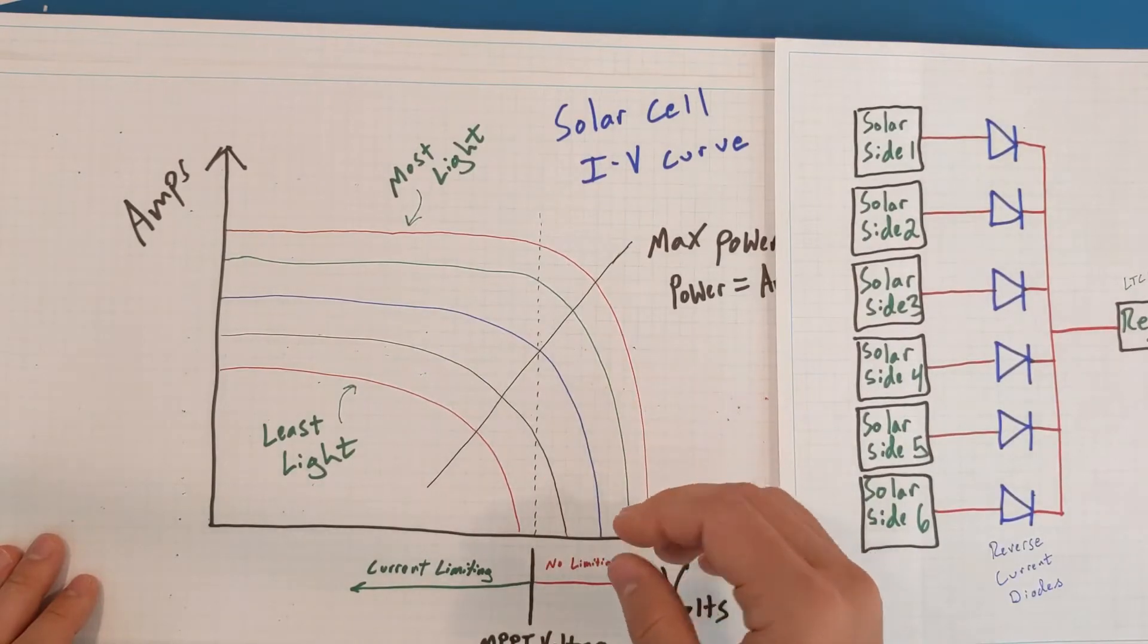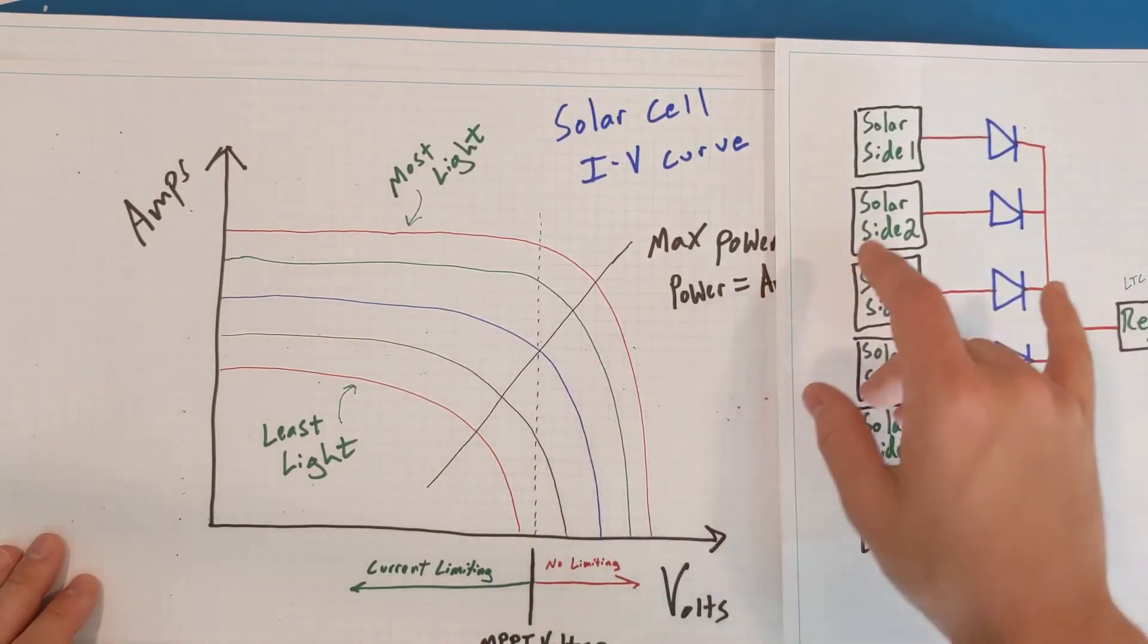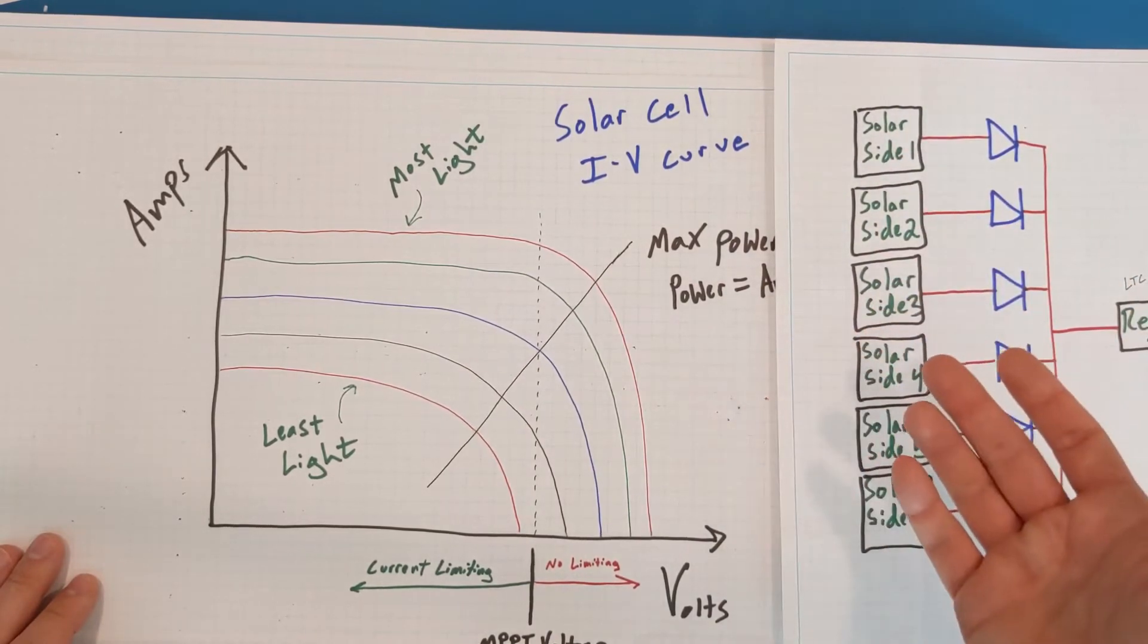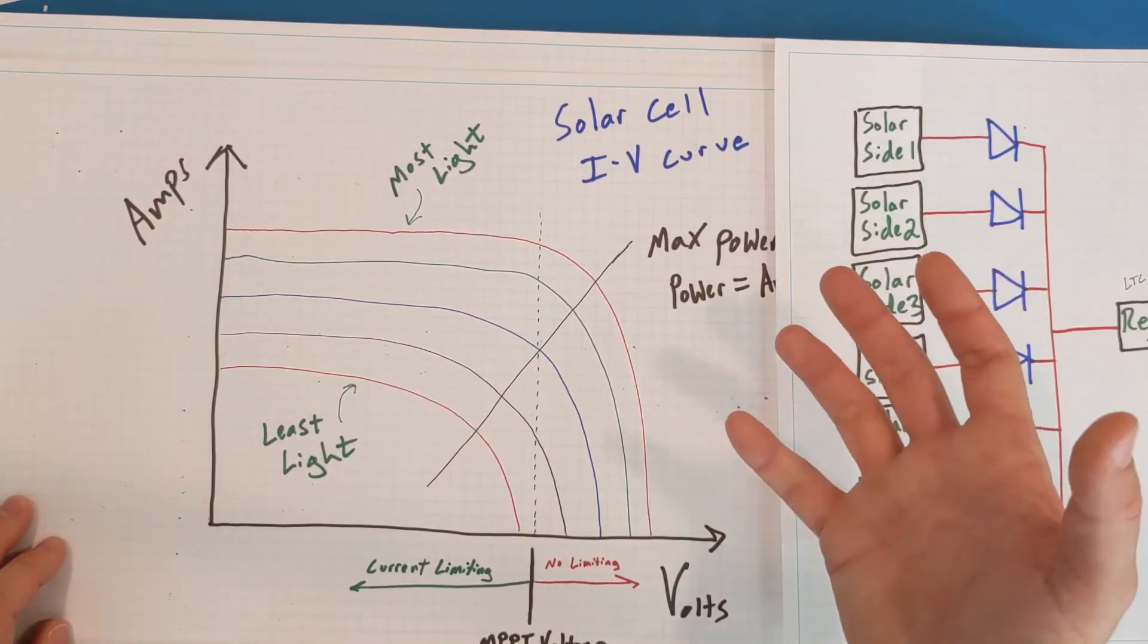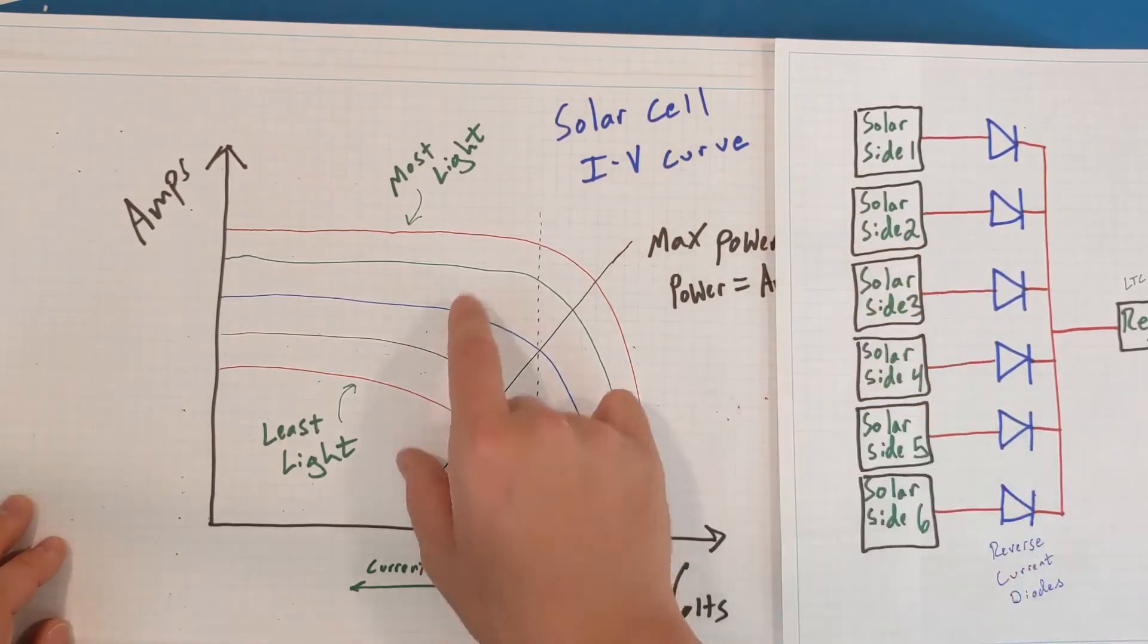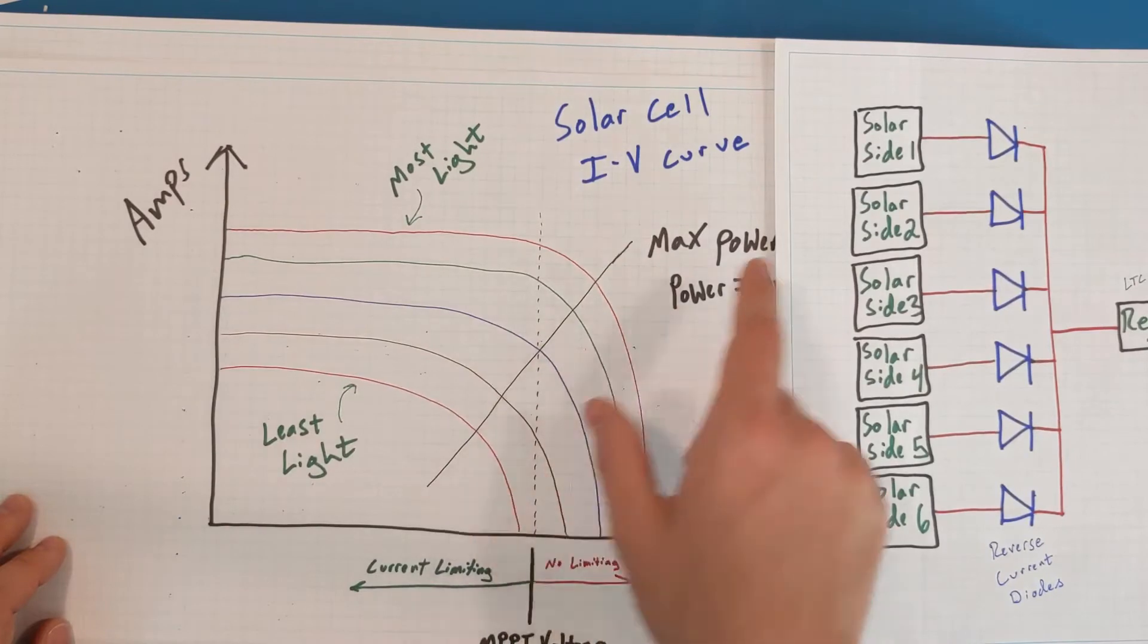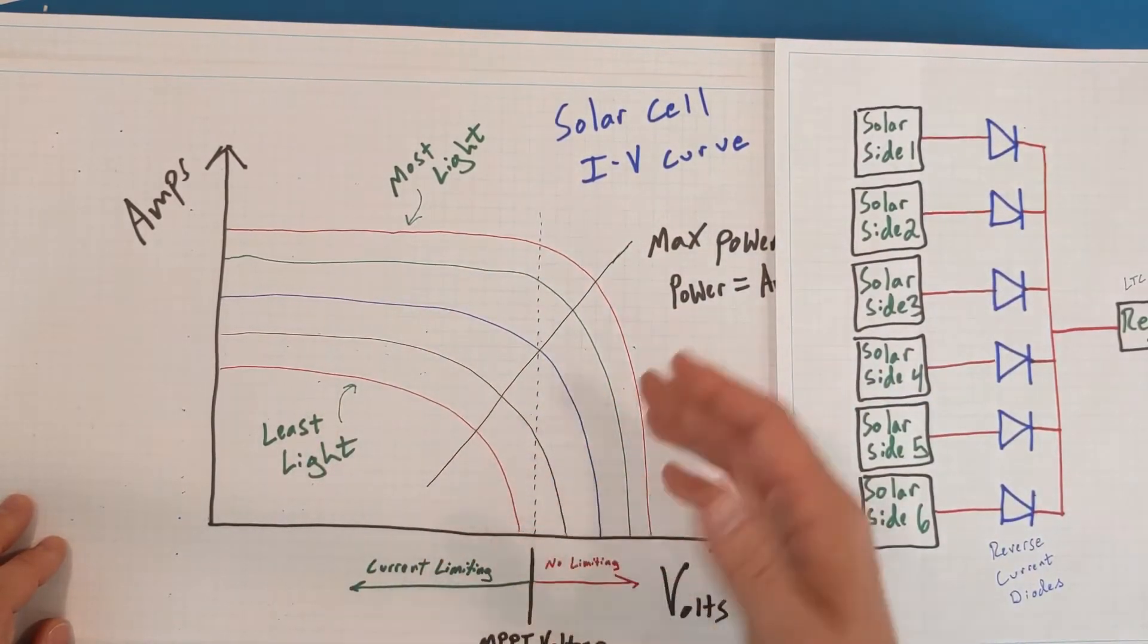If the CubeSat is in the sun, three sides of the CubeSat would likely be incident to the sun. So for this example, let's say side one, two, and three are all exposed to the sun. However, they're not exposed to the sun all at the same level, just based on how the CubeSat could be tilted. One side's facing it more than the other two. So let's say side one is getting the most light and has this curve up here. Side two is this one, and side three is this curve.